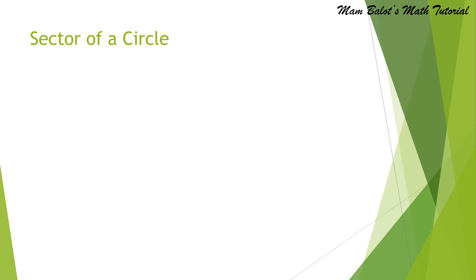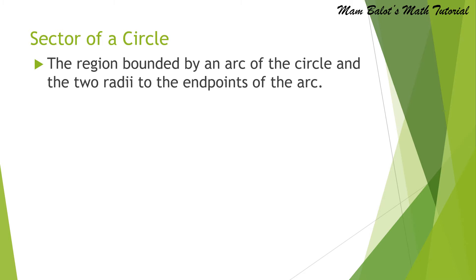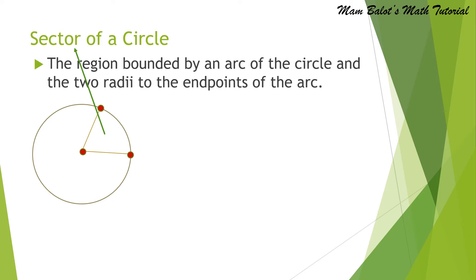Now let us proceed to the sector of a circle. It is the region bounded by an arc of the circle and the two radii to the endpoints of the arc. The area inside bounded by this region is what we call the sector of a circle — just like having one slice of a pie. To compute for that area, we have theta over 360 degrees times pi R squared. Observe that pi R squared is the formula of the area of the circle, so the sector of a circle is just a proportion of the area of the whole circle.